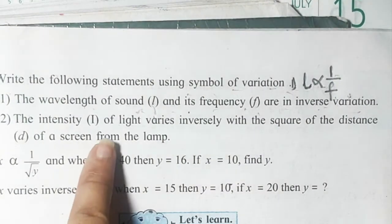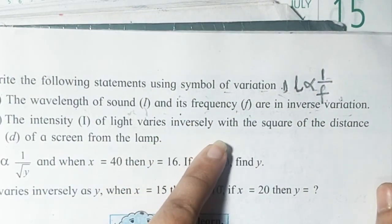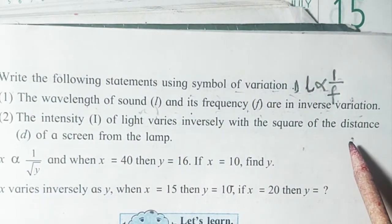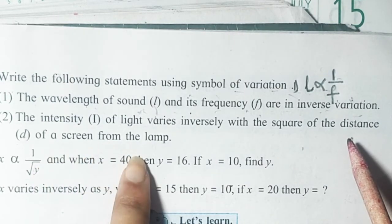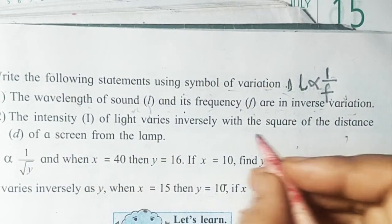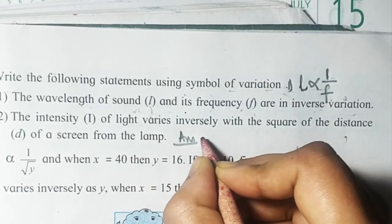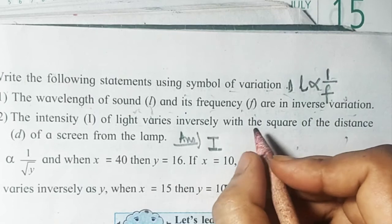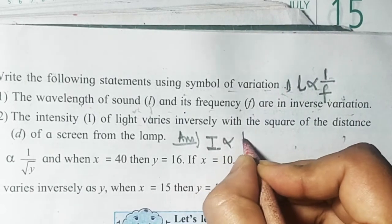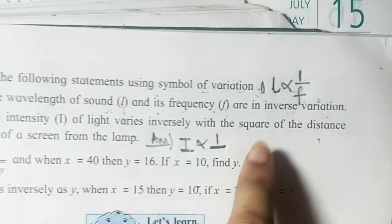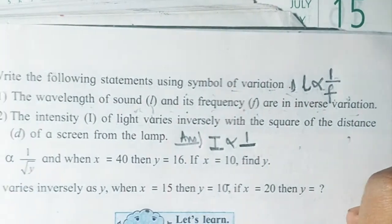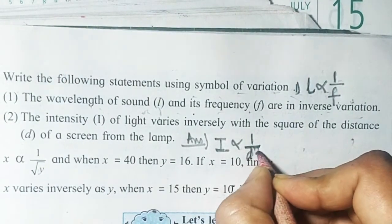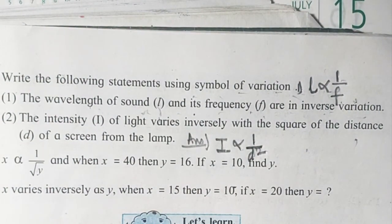The second one: the intensity i of a light varies inversely with the square of the distance d of a screen from the lamp. So i varies inversely with d squared, meaning i is proportional to one upon d squared.